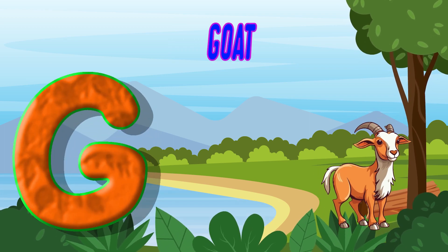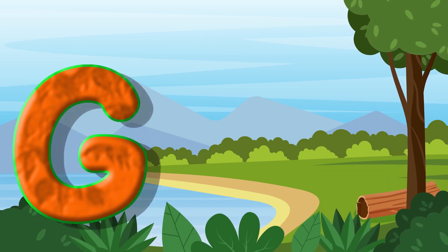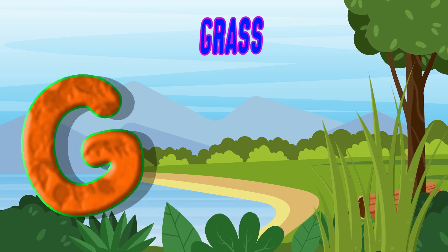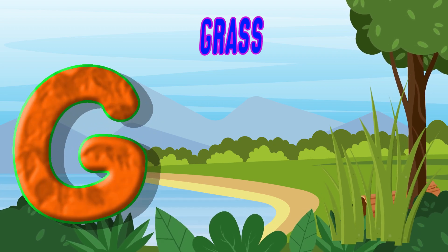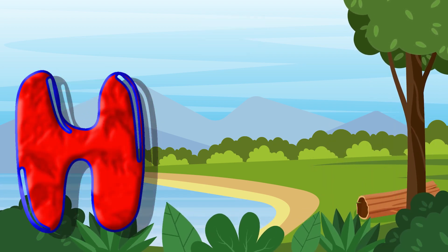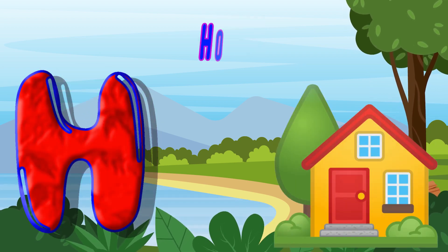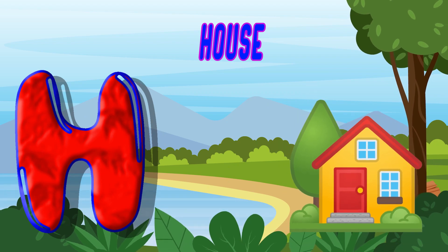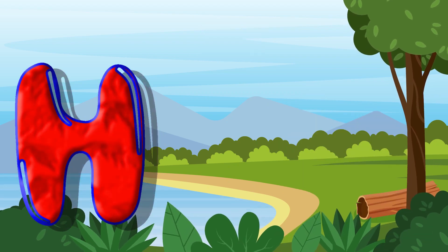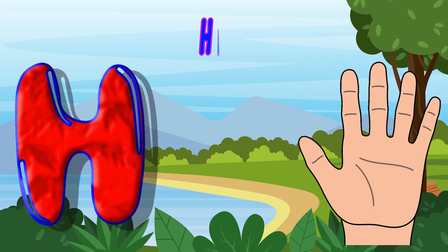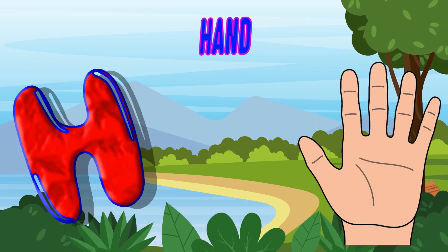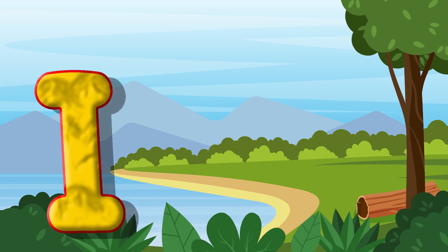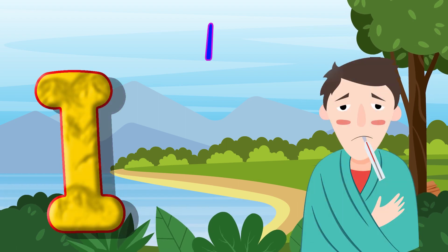G is for Goat. G, G, Goat. G is for Grass. G, G, Grass. H is for House. H, H, House. H is for Hand. H, H, Hand.